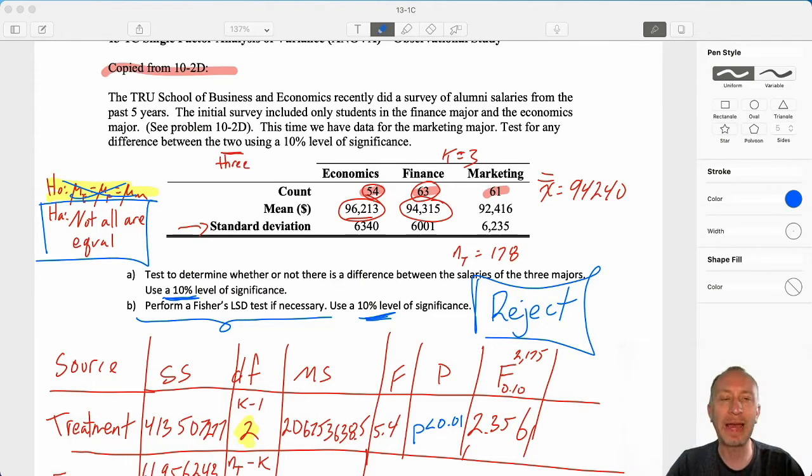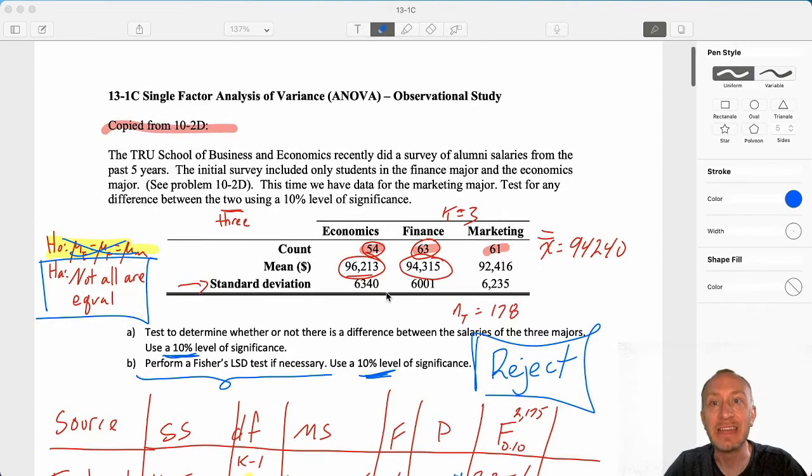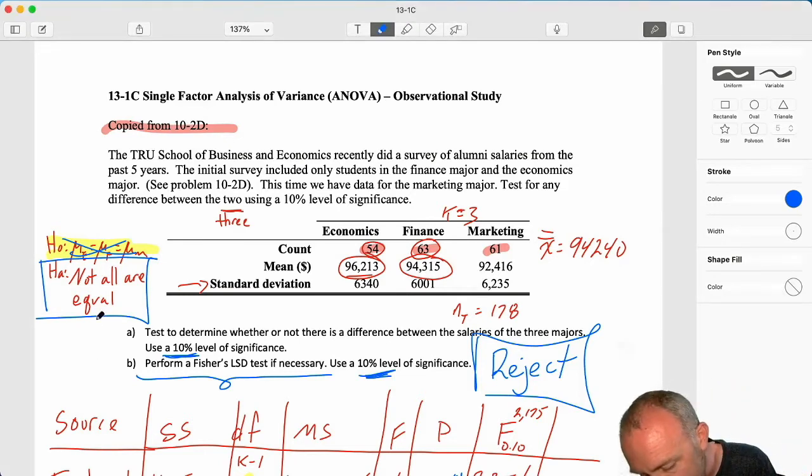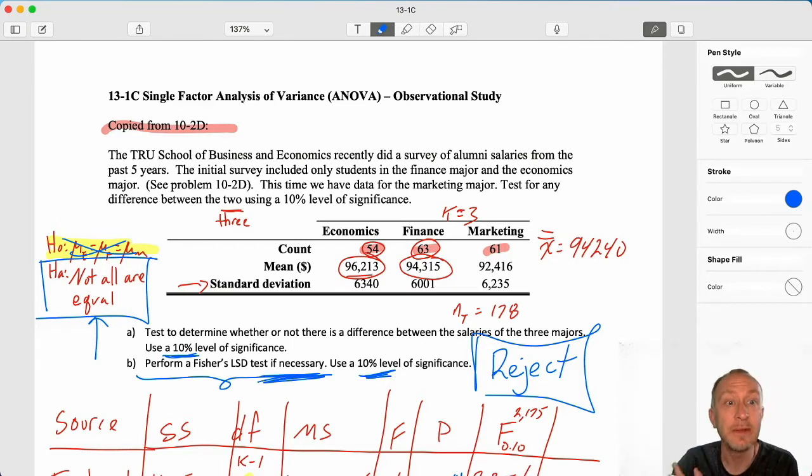Hello everybody and welcome back. We're just going to pick up right where we left off. We're looking at this problem where we were comparing the salaries of alumni from the TRU School of Business and Economics in three different majors: economics, finance, and marketing. We went through the ANOVA exercise. We had a very small p-value which gave us very strong evidence in support of the alternative hypothesis, which means that it is therefore necessary to perform the Fisher's LSD to identify where the difference exists.